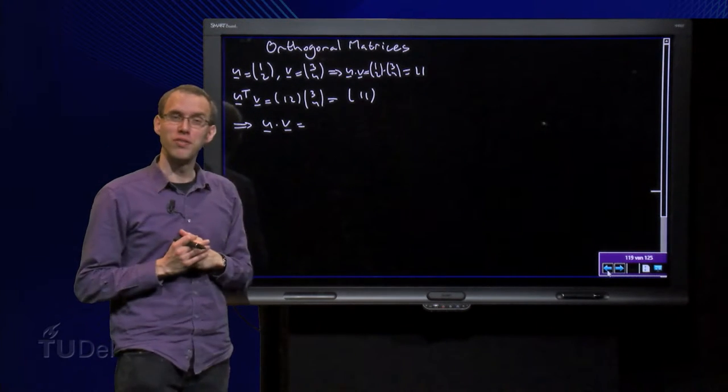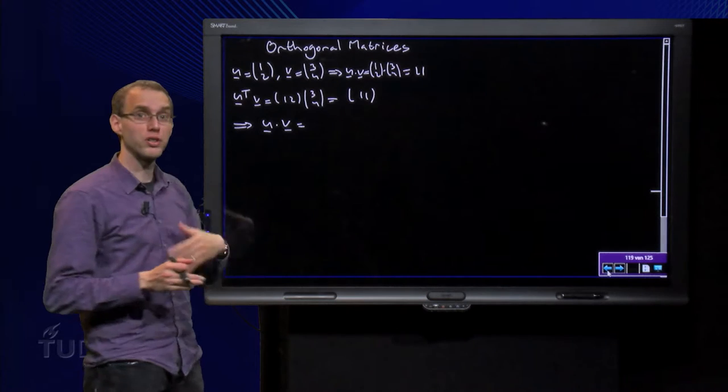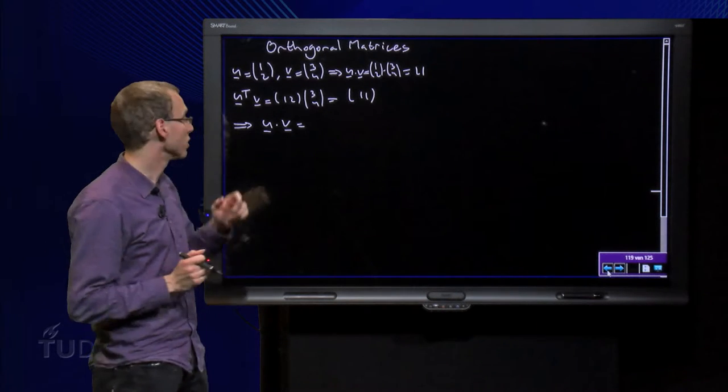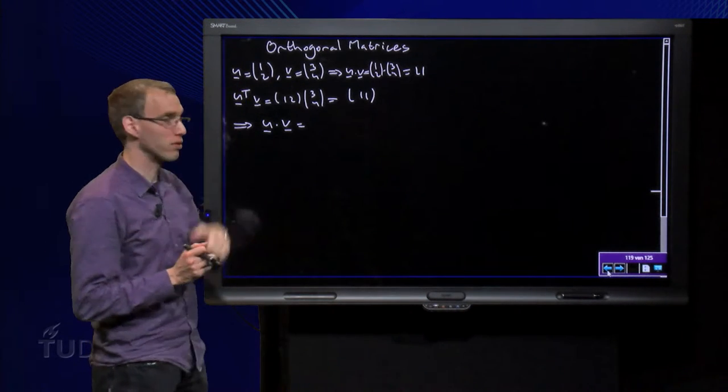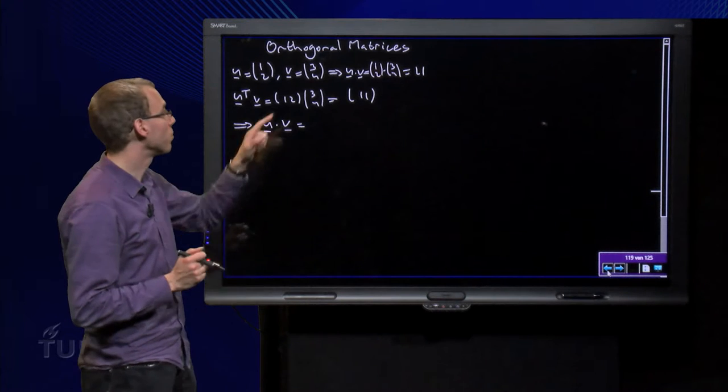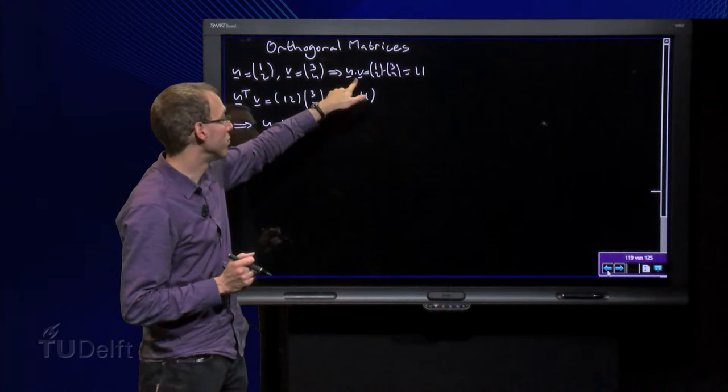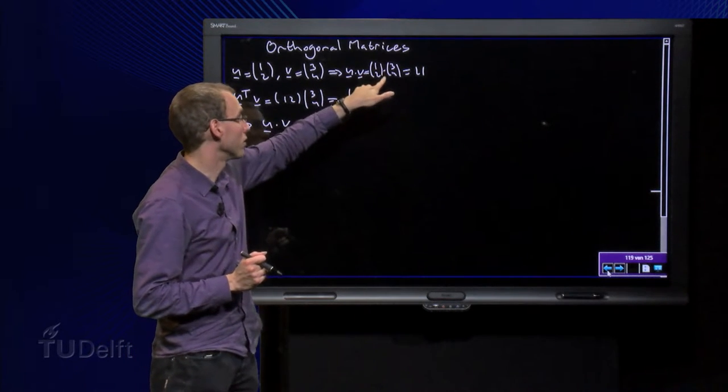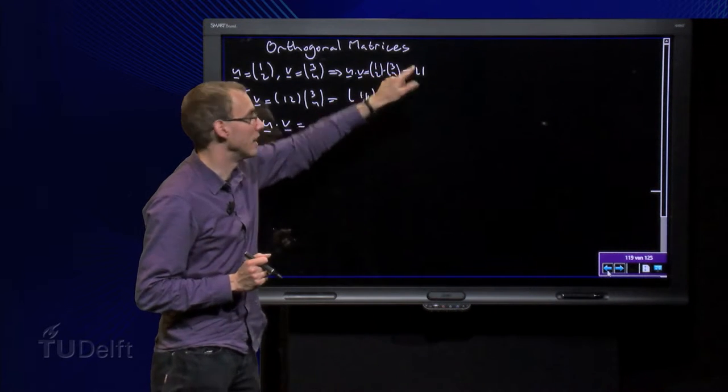First, it is convenient to have a look at the inner products a bit more. If I have a vector u and a vector v, I compute the inner product. u dot v equals 1, 2 in 3, 4 equals 3 plus 8 equals 11.